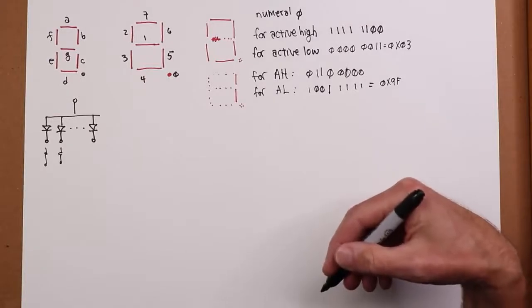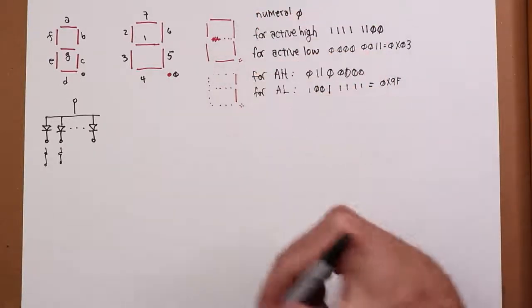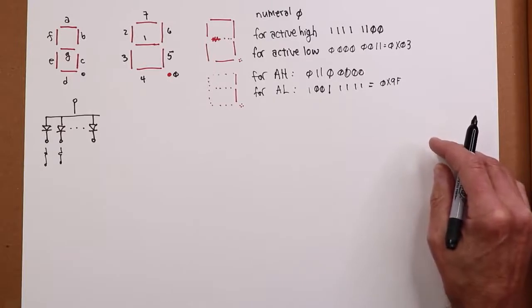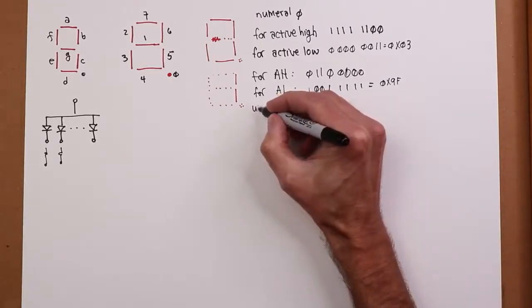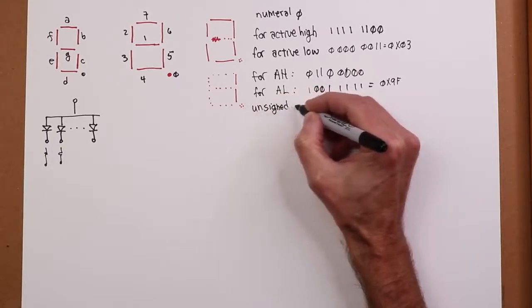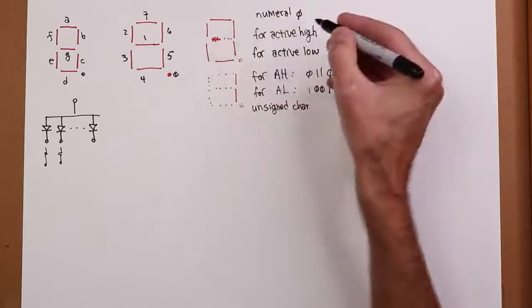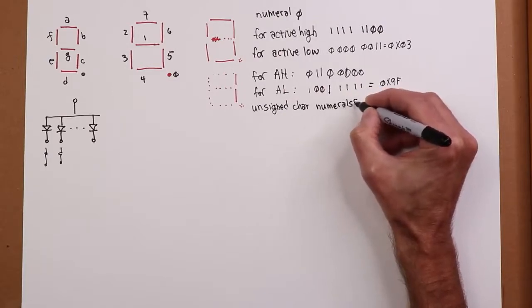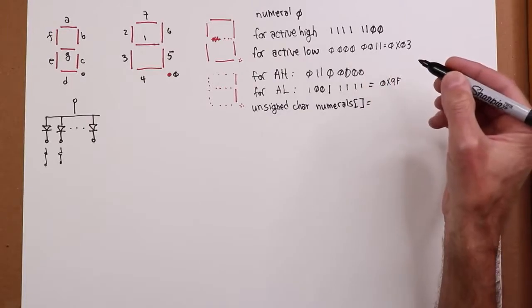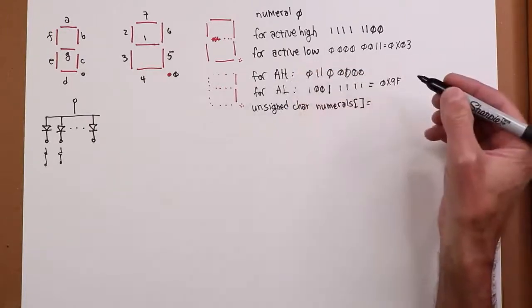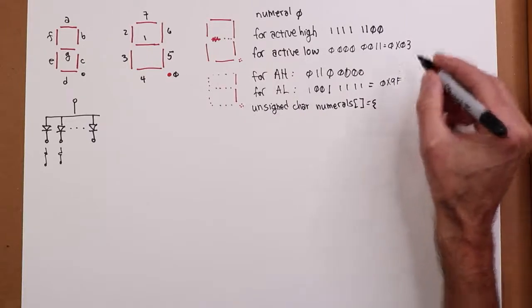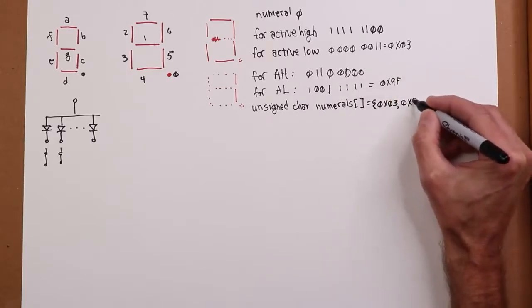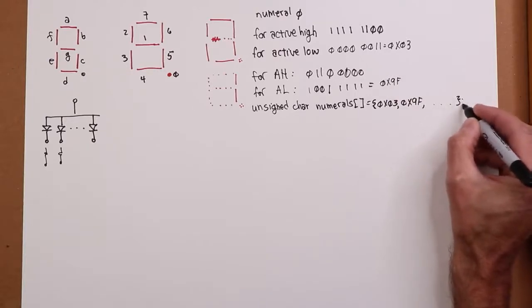And I could continue along for this. So that's zero, one, do the same thing for a two, a three, a four, a five, and so far up to nine. And what would probably be a sensible thing would be to maybe create an array of unsigned characters here. Maybe I'll call it numerals. And I'll just put these values in here. So I'm going to continue along with our active low implementation. So the zeroth position would be hex zero three, and then the next one, hex nine f, and so on and so on, until we fill out all of those.